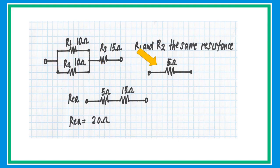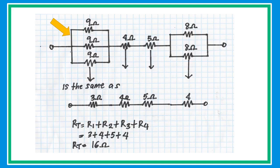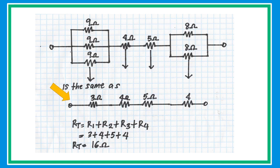Redraw and simplify the circuit, then add R3 — which is 15 ohms — to get a total equivalent resistance of 20 ohms. In the next example, three 9-ohm resistors are connected in parallel. Dividing 9 by 3 gives an equivalent resistance of 3 ohms. Since two 8-ohm resistors are also connected in parallel with the same value, get half of 8 to get 4 ohms. The circuit is now simplified to a series circuit, and using RT equals R1 plus R2 plus R3 plus R4, substitute the values to get an equivalent resistance of 16 ohms.